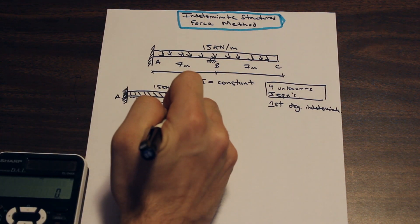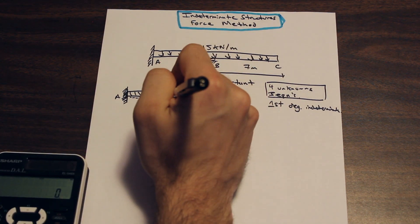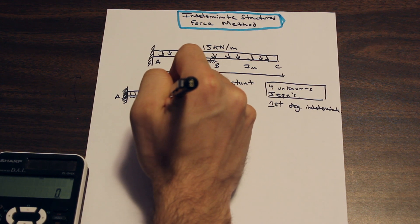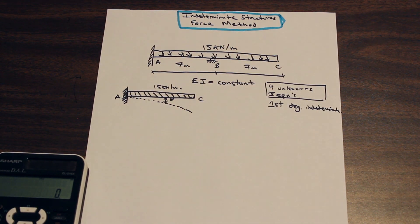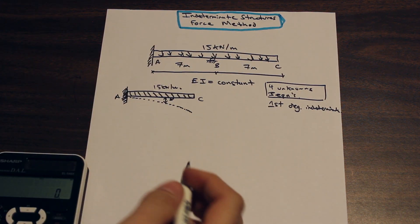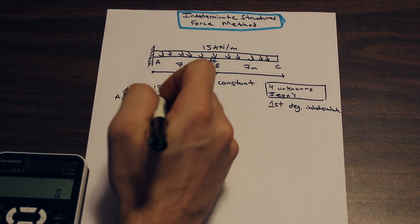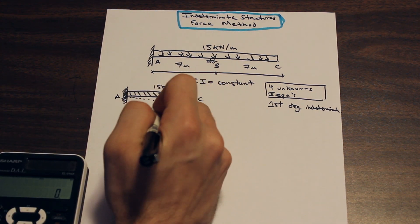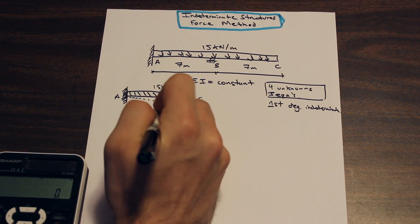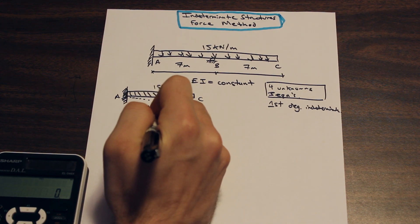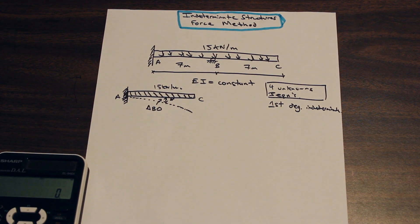Now, we still have point b here. And now we have a deflection right here. That deflection is caused by the real loading and we're going to name this deflection bo. So this is called delta bo. Perfect. So that's the first part of the question.